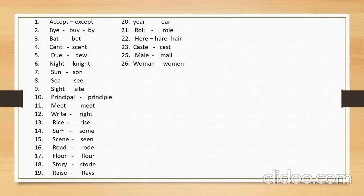Number nineteen: 'raise,' meaning buland hona — for example, 'raise your hands' means apne haathon ko buland karo. Its similar in sound word is 'rays,' meaning showing — rays of light. Number twenty: 'year,' meaning saal — a year. Its similar in sound word is 'ear,' meaning kaan — the ear.